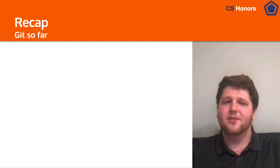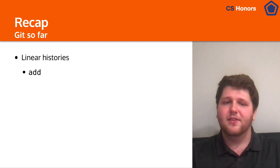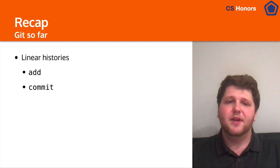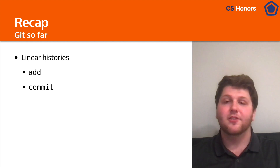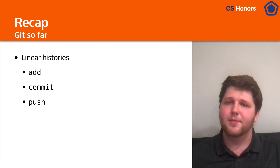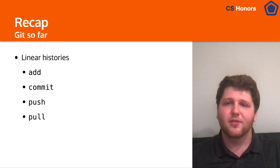So let's get back to Git. To recap what we did in the last lecture, we talked about linear histories including how we can add files to tell Git what we want to take a snapshot of. We can commit them or take that snapshot of the file at a certain time. We can then push them to an external server so that other people can access our commits, and then we can pull other people's commits from that same server.